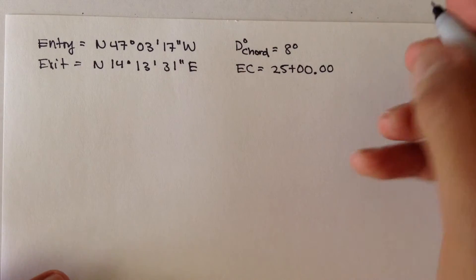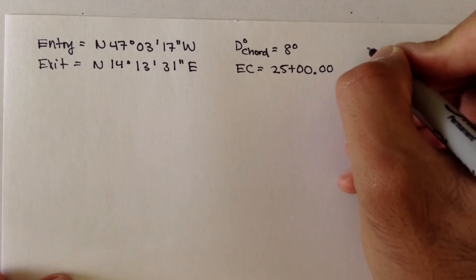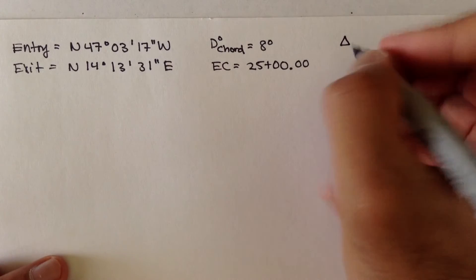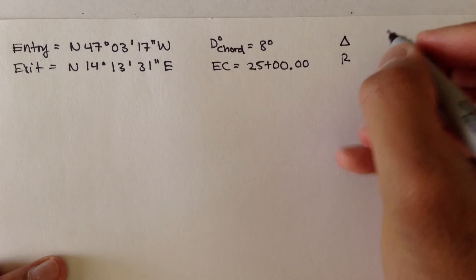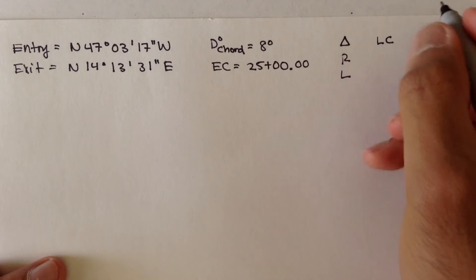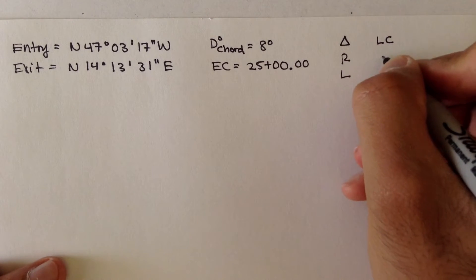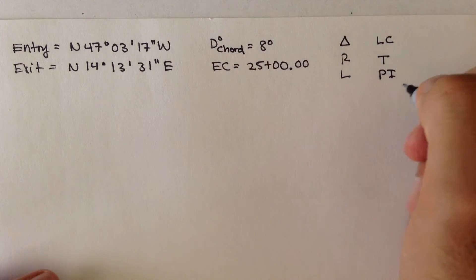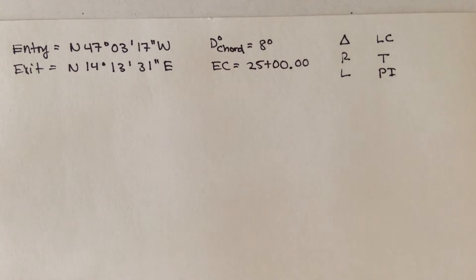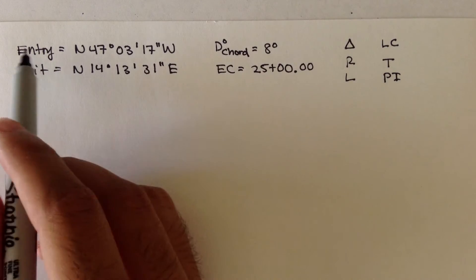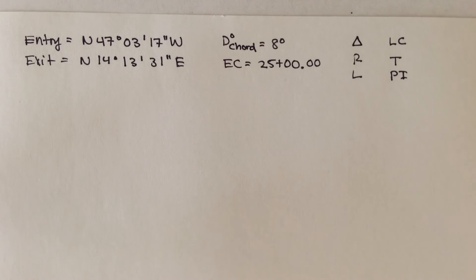In this problem, we want to find what delta is — delta, remember, is our interior angle. We want to find the radius, the length of this curve, the long chord of this curve, the tangent distance, and we also want to find the PI, the point of intersection. The very first thing, let's deal with these entry and exit bearings.